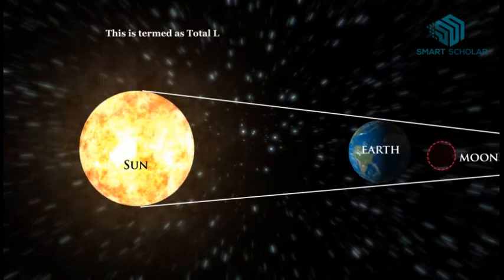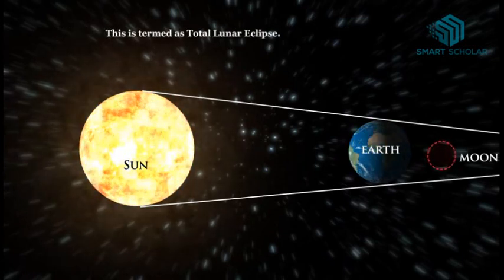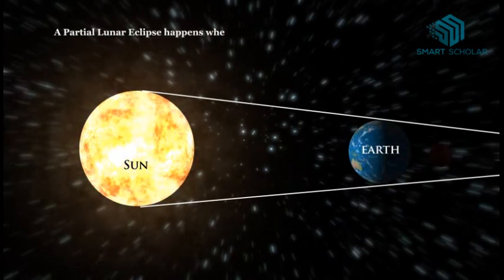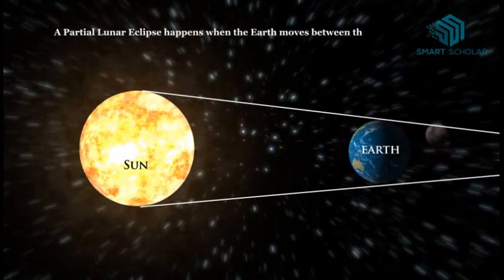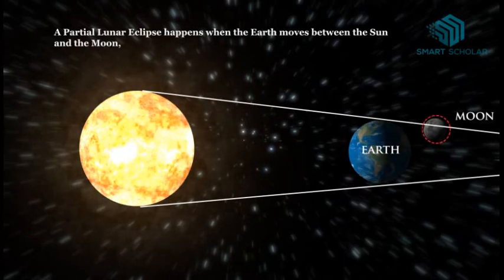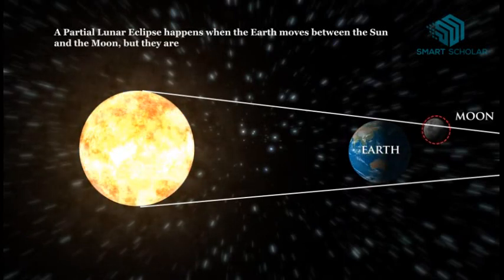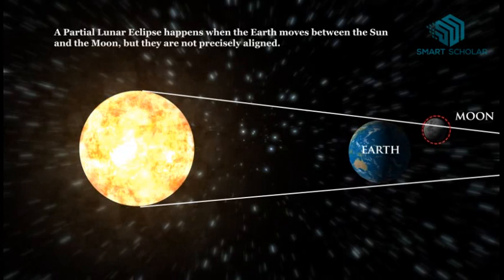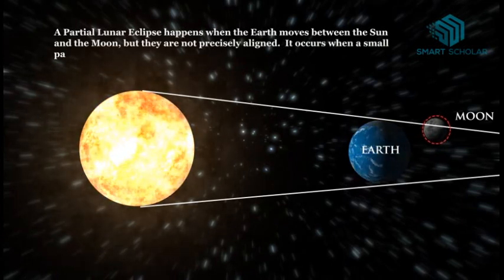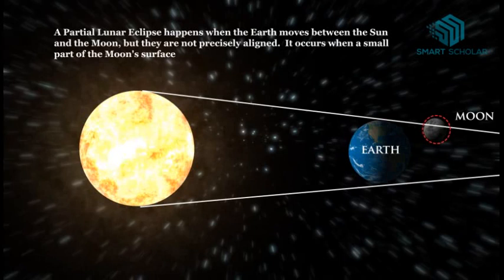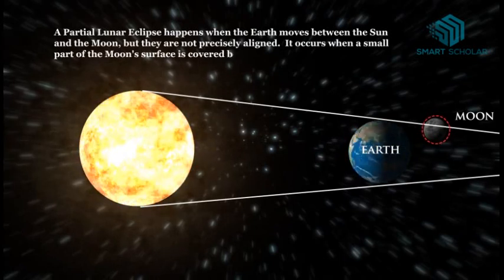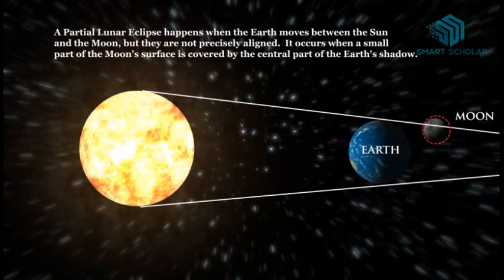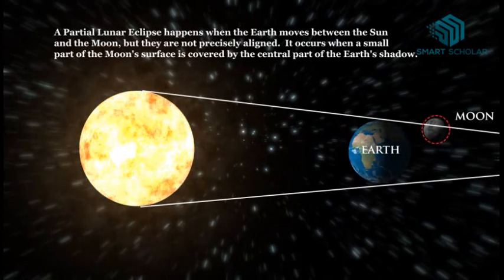This is termed a total lunar eclipse. A partial lunar eclipse happens when the earth moves between the Sun and the moon but they are not precisely aligned. It occurs when a small part of the moon's surface is covered by the central part of the Earth's shadow and completely blocked.